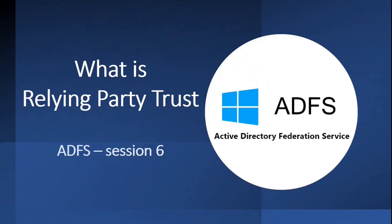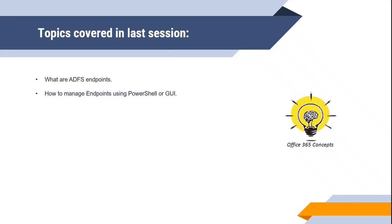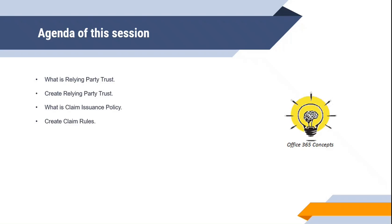Hi guys, I hope you all are doing well and welcome to the sixth video of the entire series of ADFS. In the last video, we discussed what are endpoints in ADFS and how to manage endpoints using ADFS Management Console and using PowerShell. In this particular video, we will be talking about relying party trust in ADFS. I will be showing you practically how to create relying party trust, what is claims issuance policy, and how to create a claim rule so that ADFS can send specific claims to the application.